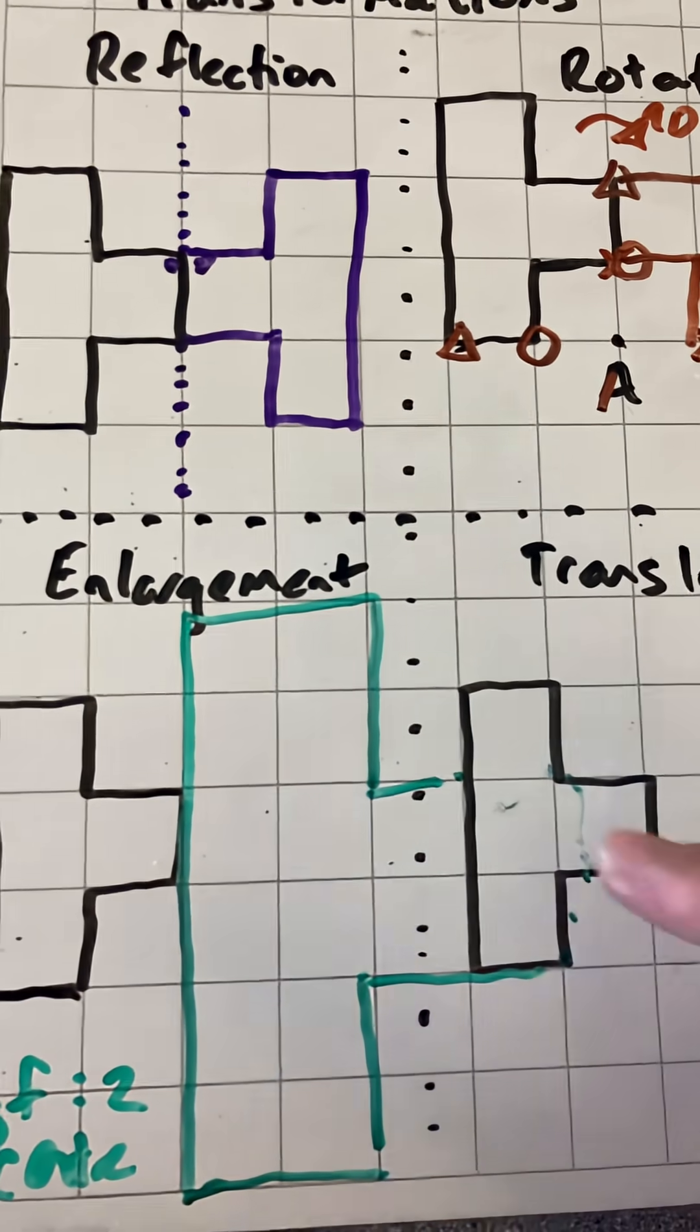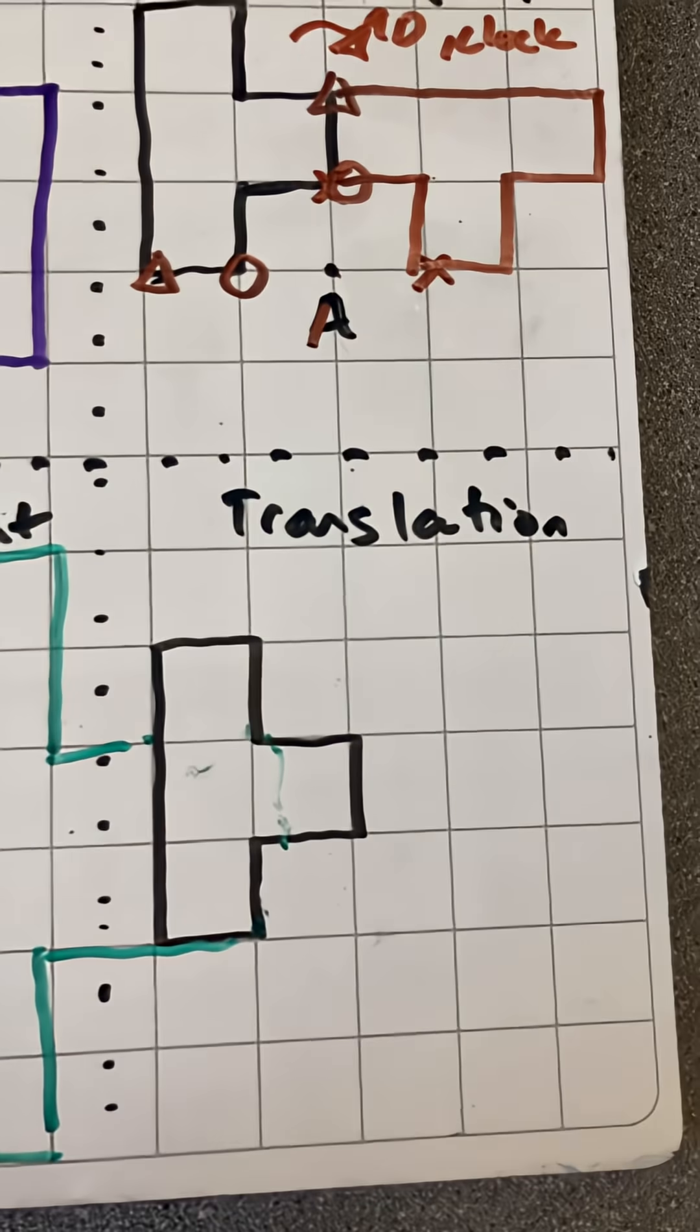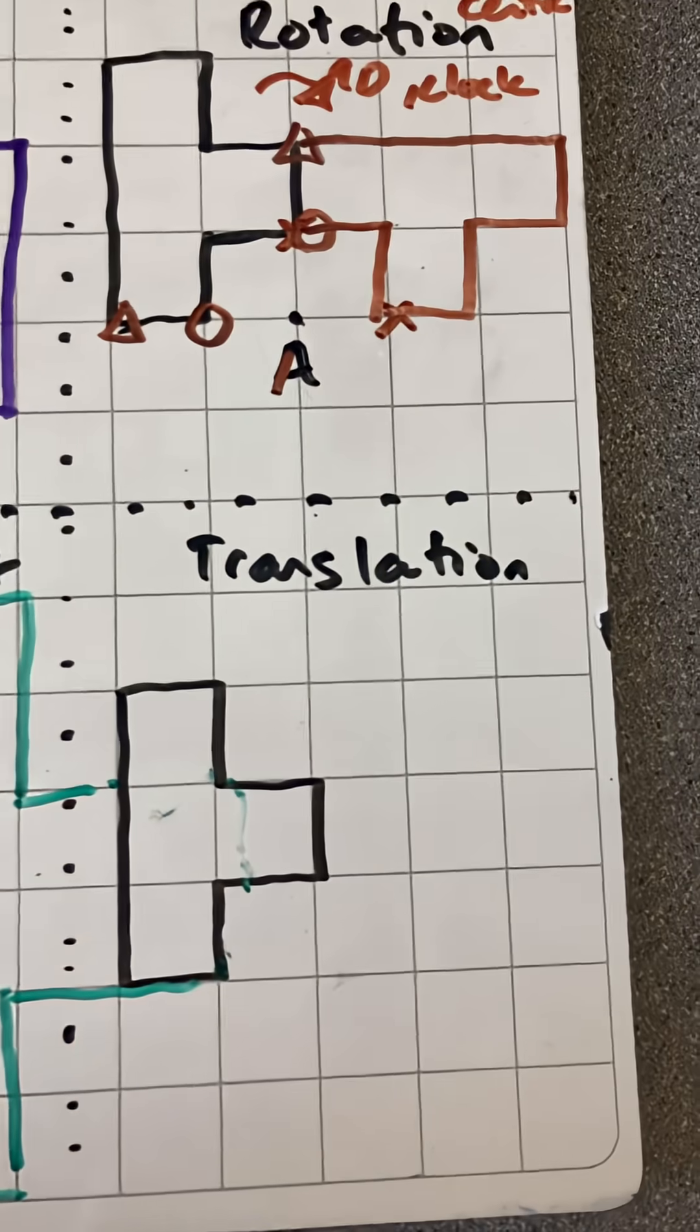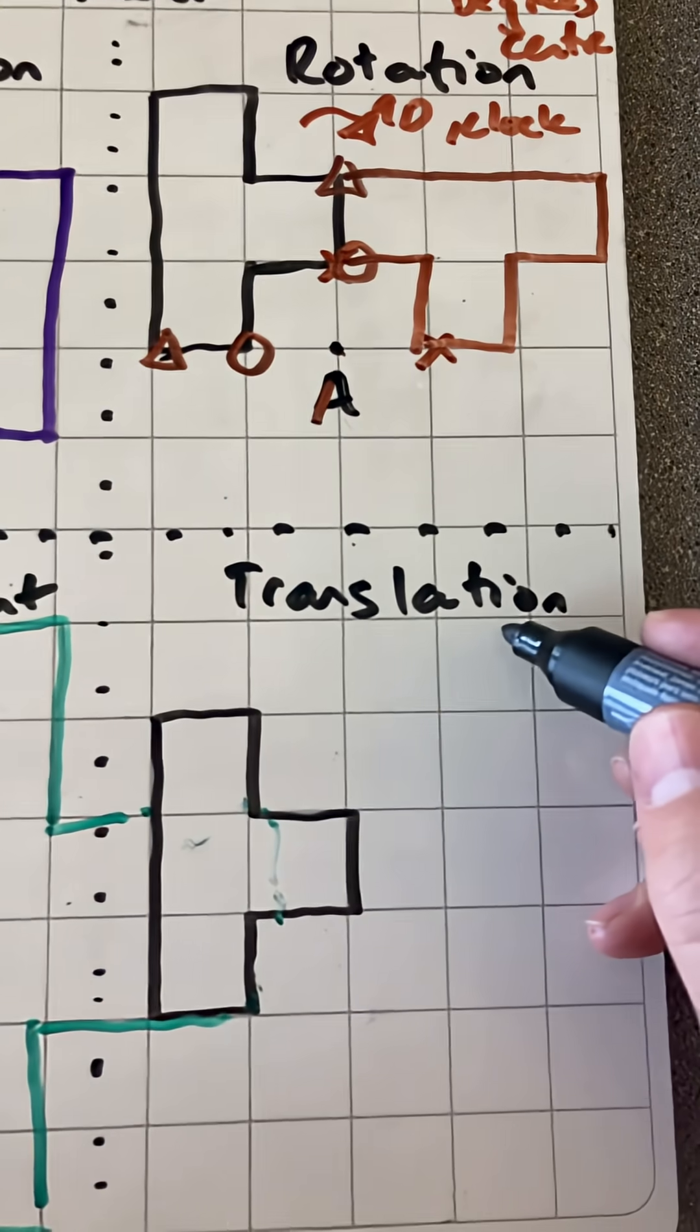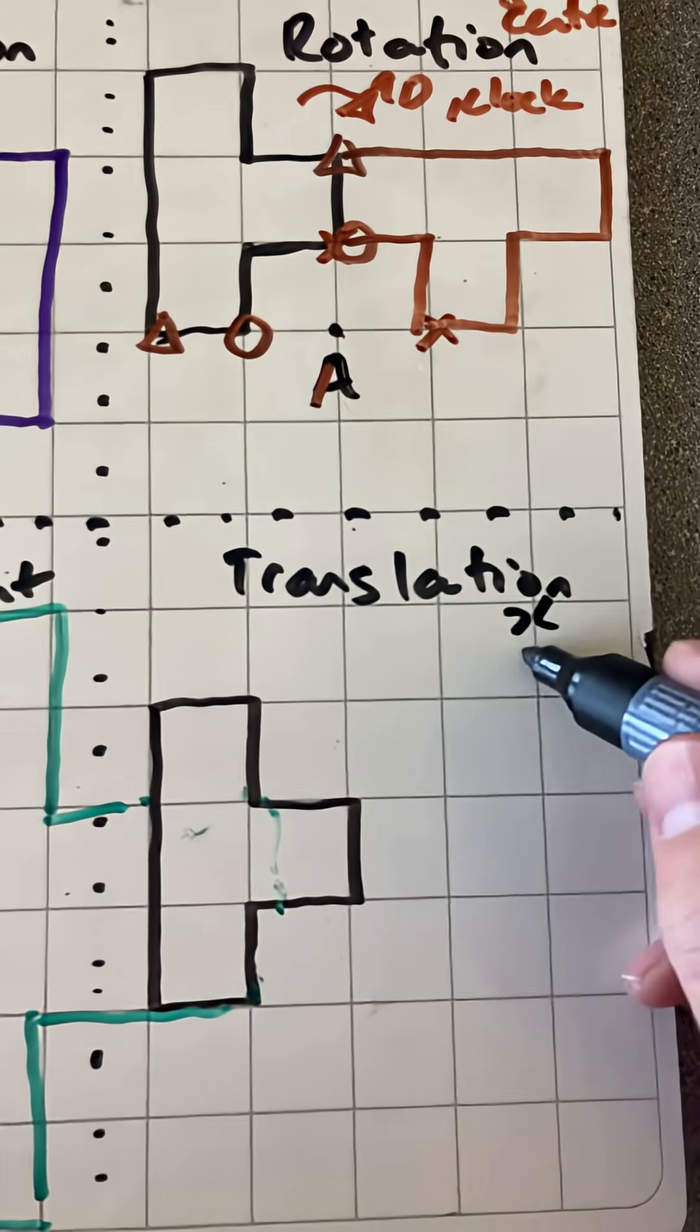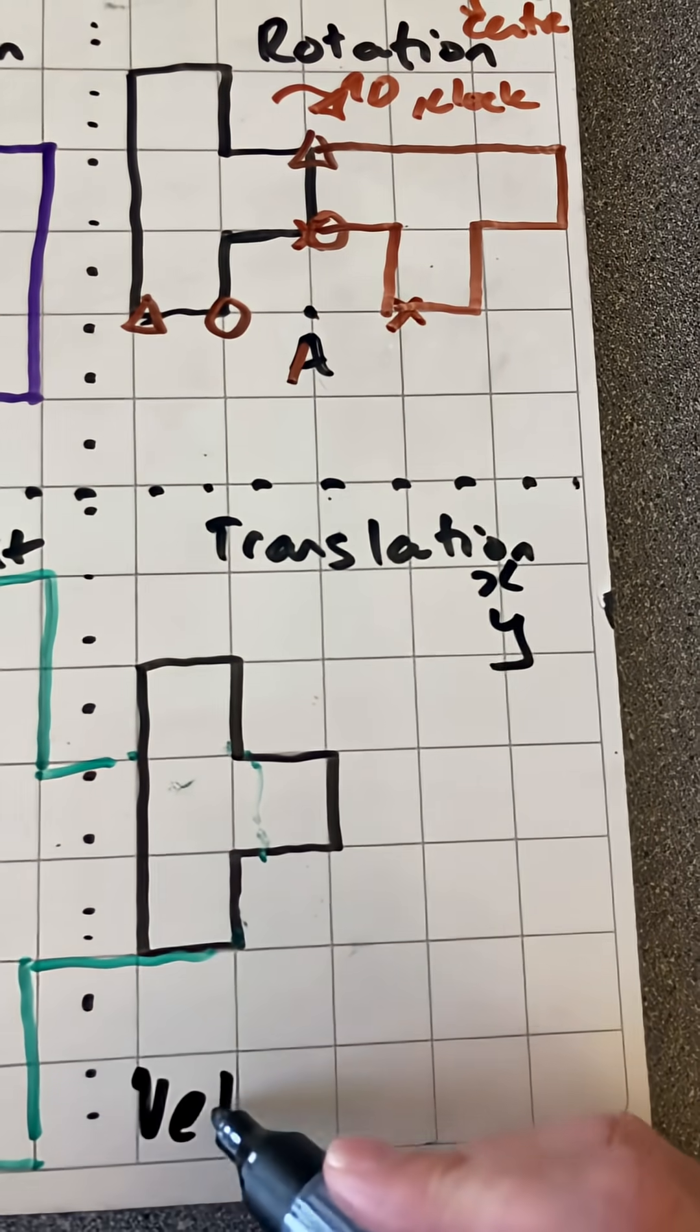Okay, I'm just going to erase those for the last one here, which is translation. And for translation, we need to know how much we're going in the X direction, how much we're going in the Y direction. And we use a vector for that.